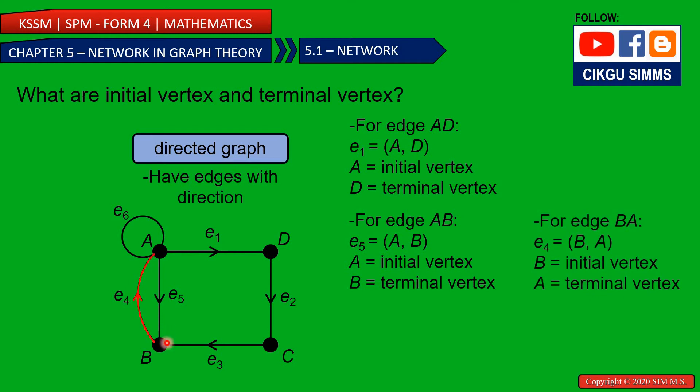So for AA, so A is called the initial vertex and then going to A, so A is also the terminal vertex. So for this one, starting is called the initial vertex and then the end is called the terminal.